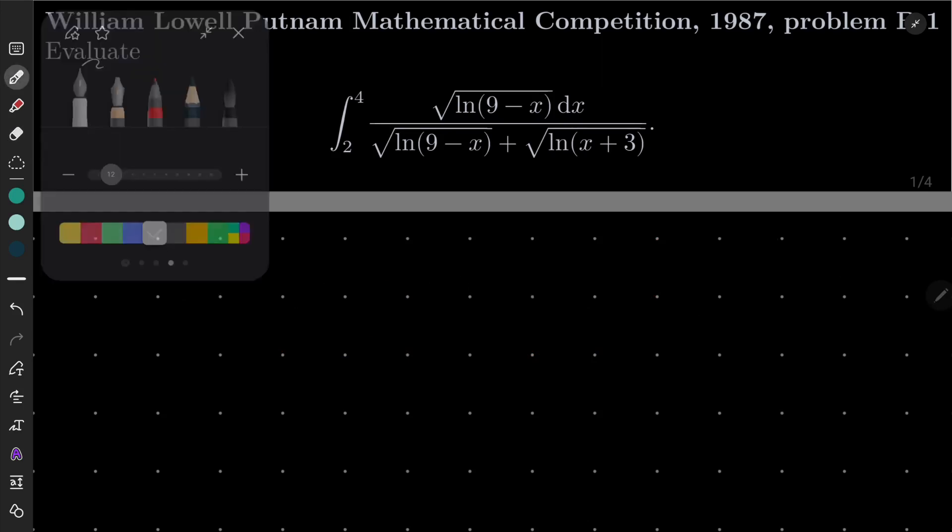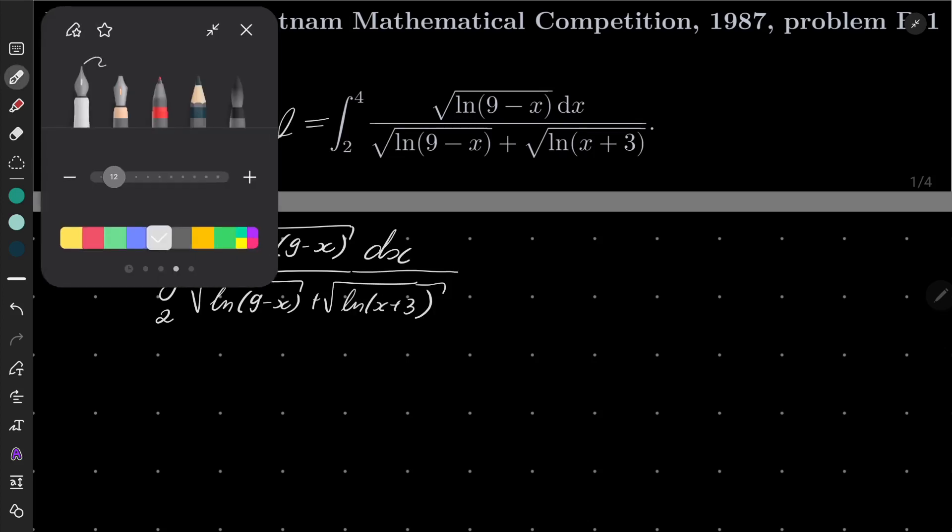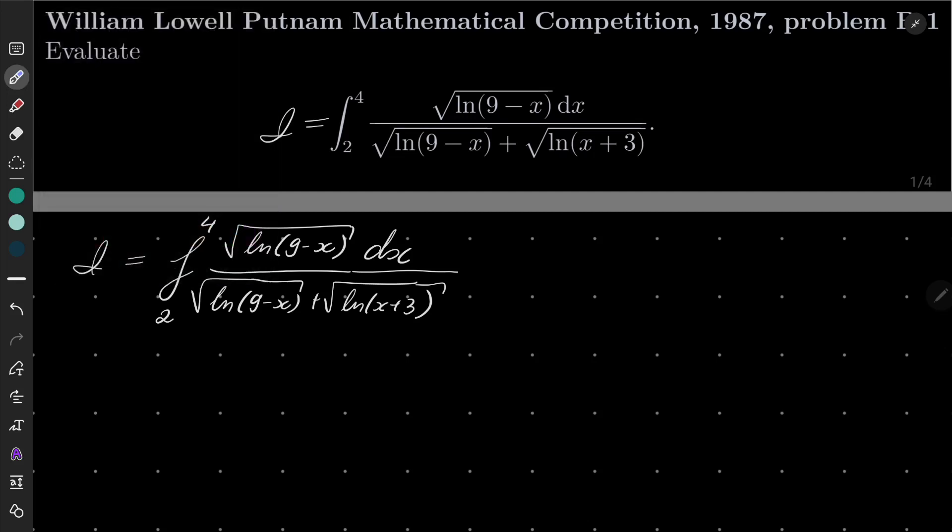Okay, so I hope that you tried to solve this problem. First of all, let's call our integral I, and I will write it here: integral from 2 to 4 of square root of natural log of 9 minus x over the square root of the same plus the last square root dx. And now to make our interval of integration symmetric, we will make the following substitution: x equals t plus 3.